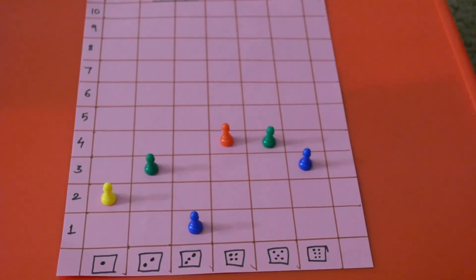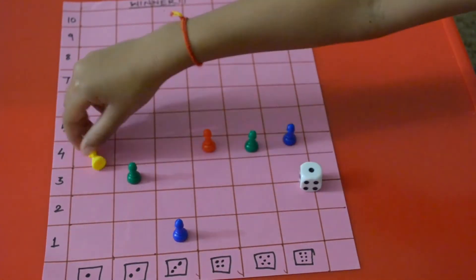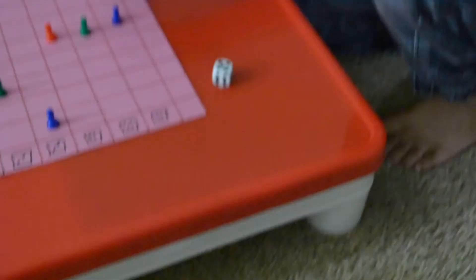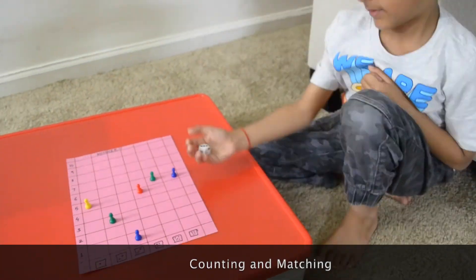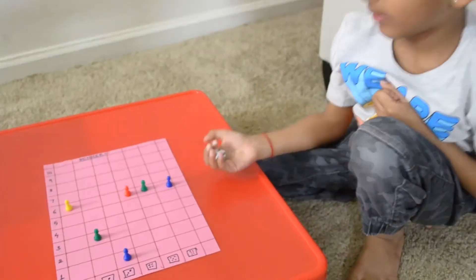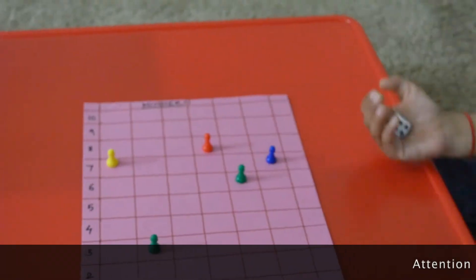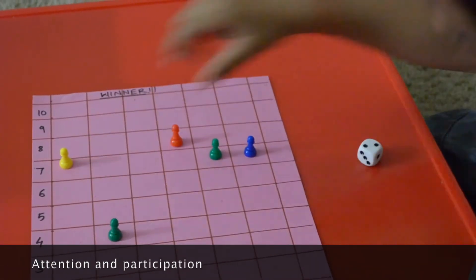Who will race to the top? Whichever number reaches to the top first, that number will be the winner of the game. The game is great for practicing counting and matching, quick number identification. They are very attentive while playing and happily participate in the race game.